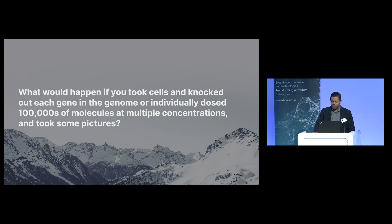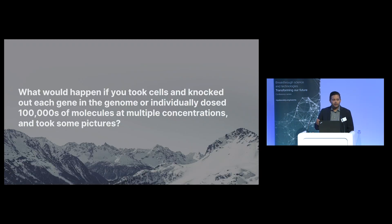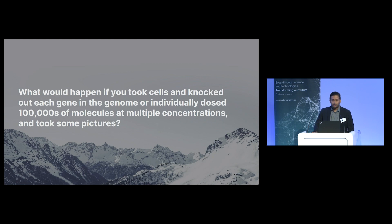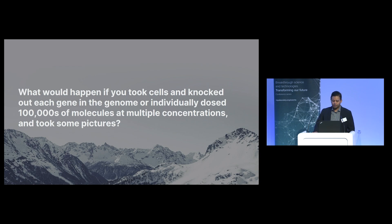How would we do that? What if we took cells and individually knocked out each gene in the genome and individually dosed hundreds of thousands of small molecules at multiple concentrations, then took some pictures and shoved it into deep learning? What would come out is something that we call Recursion maps of biology. I'll show you a few of the things this technology enables for our understanding of biology and chemistry.